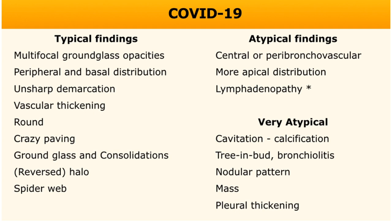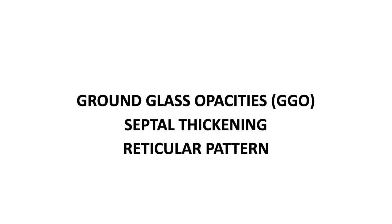The typical findings of COVID-19 pneumonia are multifocal ground glass opacities with peripheral and basal distribution, vascular thickening, and subpleural spiderweb pattern. Atypical findings include central or peribronchiovascular distribution, more apical distribution, and lymphadenopathy. Very atypical presentations include cavitation, calcification, tree-in-bud pattern, nodular opacities, and pleural thickening.